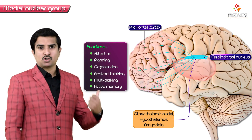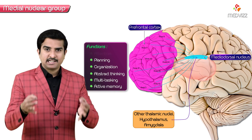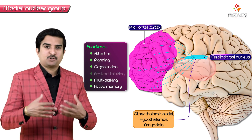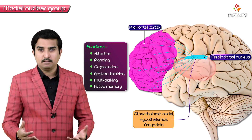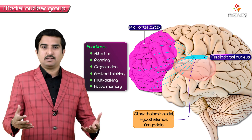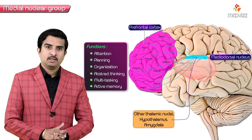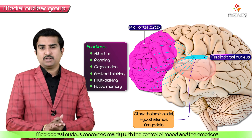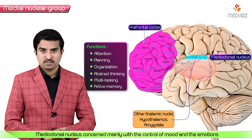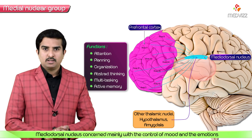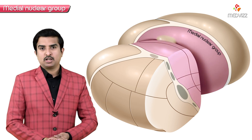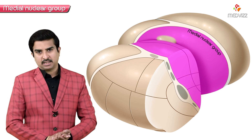As a result, the mediodorsal nucleus plays a crucial role in attention, planning, organization, abstract thinking, multitasking, and active memory. It is mainly concerned with the control of mood as well as emotions. This is the function of the medial nuclear group of the thalamus.